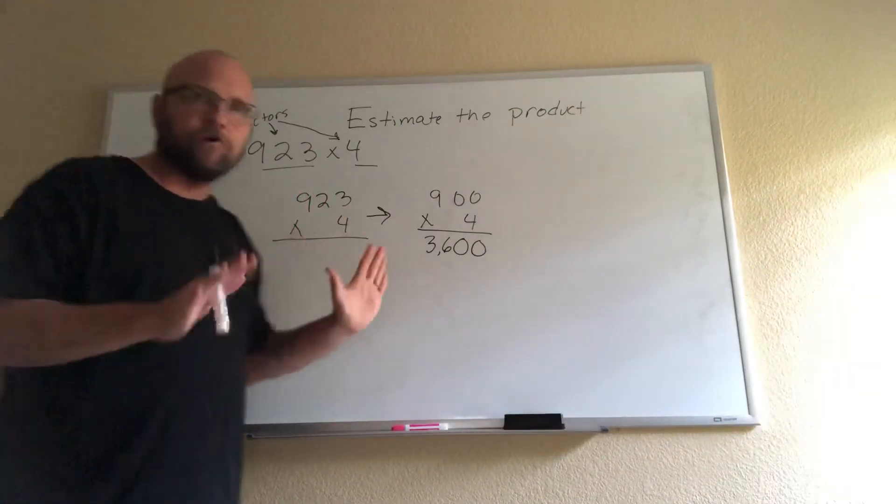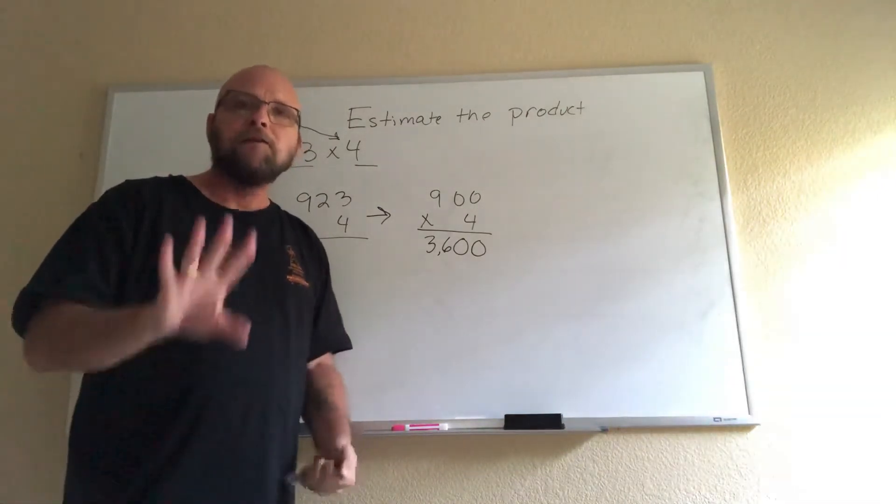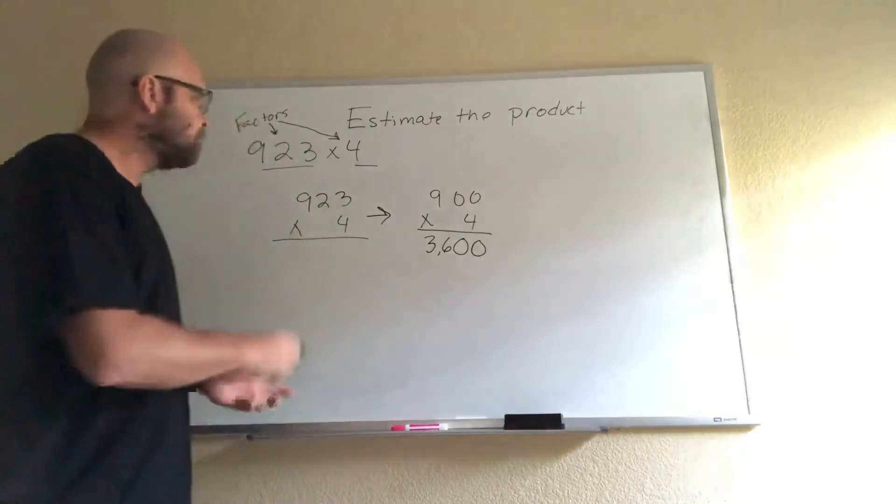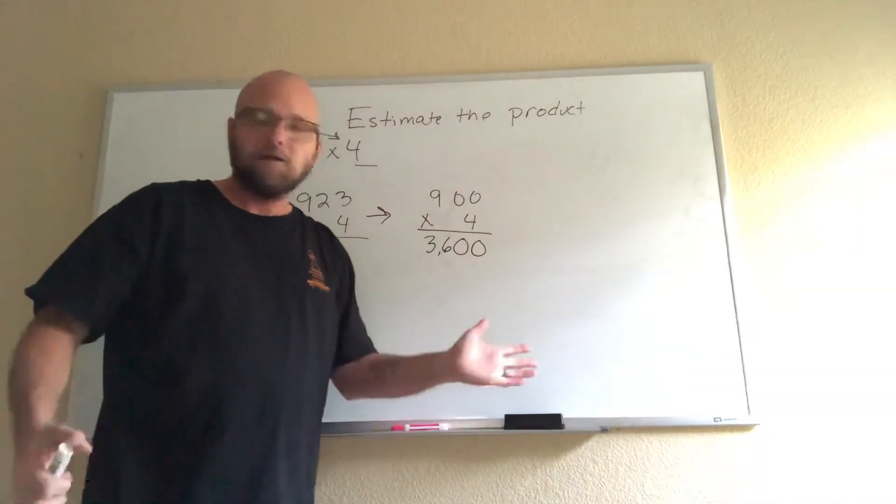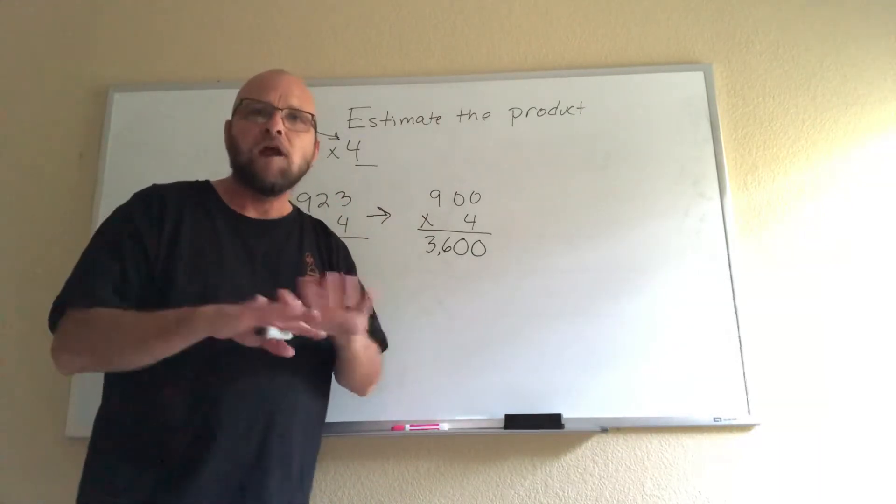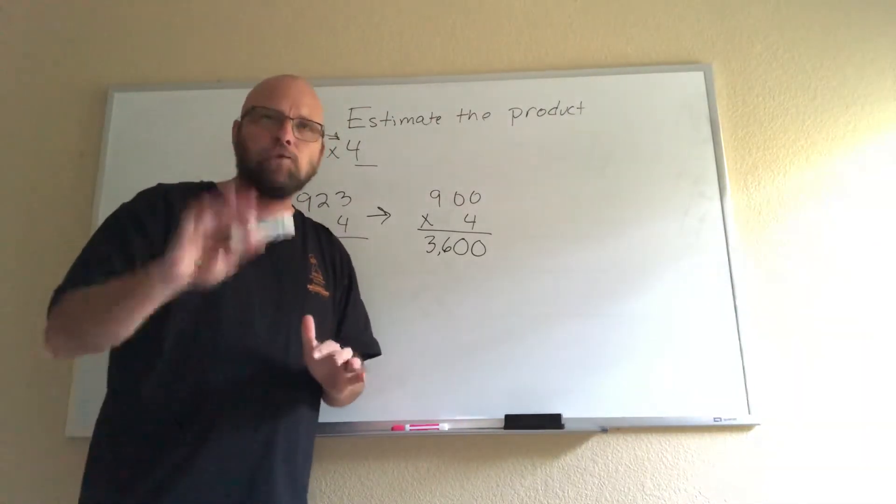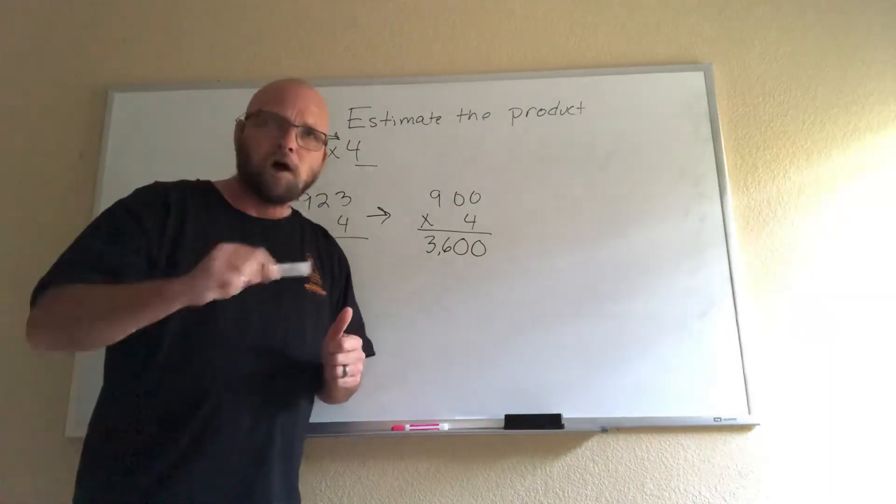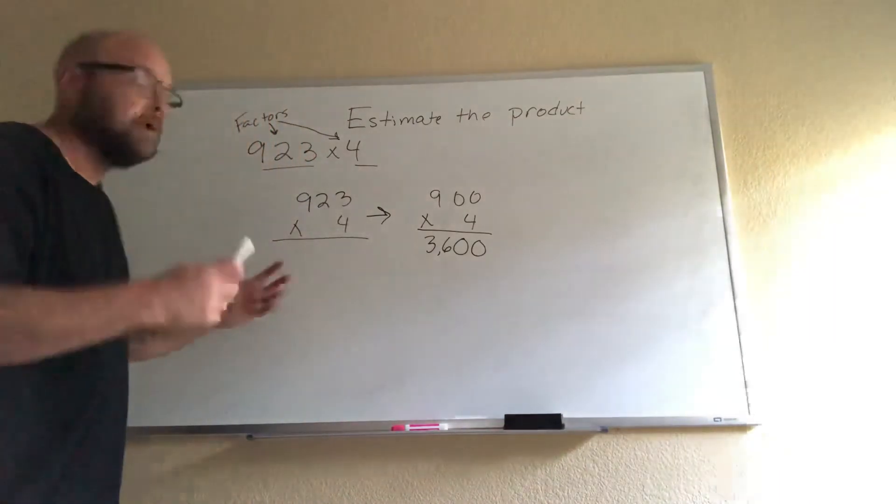Now we're going to do the standard algorithm. Let me say one thing about the standard algorithm: all you need to know is how to multiply one digit by one digit. I don't care if I have a factor that's seven digits long. You could look at it as just one digit times one digit. There is zero reason to panic. You have a multiplication chart.